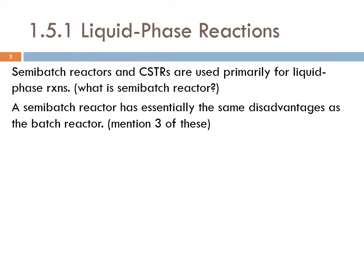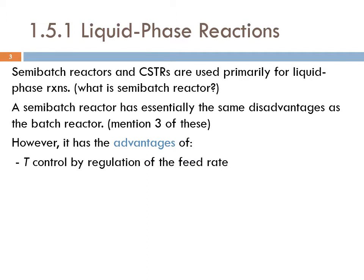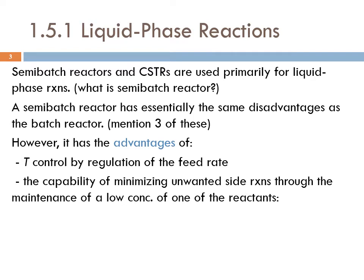A semi-batch reactor has essentially the same disadvantages as the batch reactor. However, the semi-batch reactor has the advantage of temperature control by regulation of the feed rate. Another advantage is the capability of minimizing unwanted side reactions through the maintenance of a low concentration of one of the reactants.